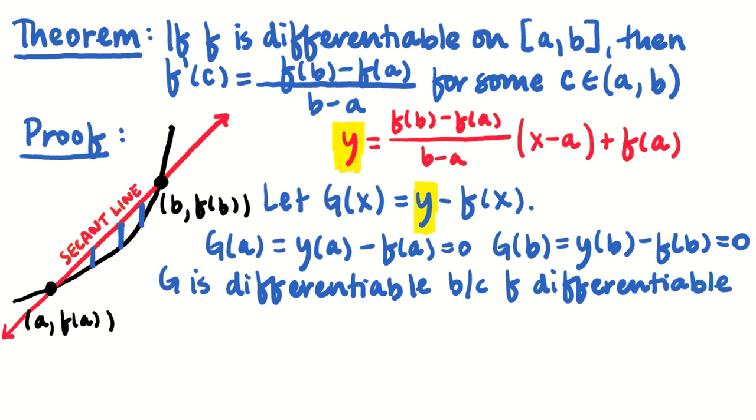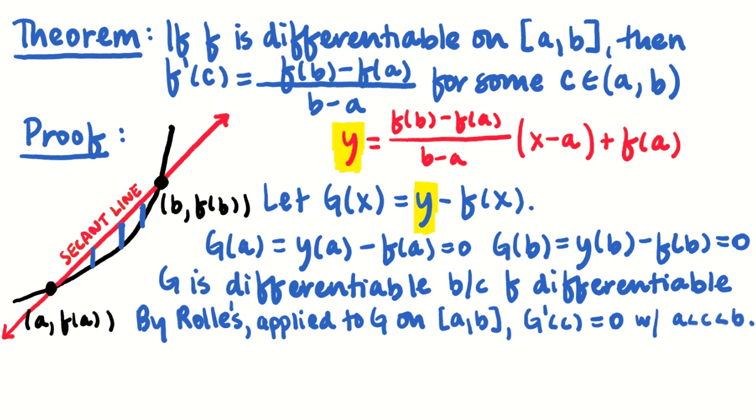So that means if g(a) is zero and g(b) is equal to zero, I'm going to apply Rolle's theorem onto g on the interval [a, b]. So when I apply Rolle's theorem to g on the closed interval a to b, I get that g'(c) equals zero and that value of c is between a and b.